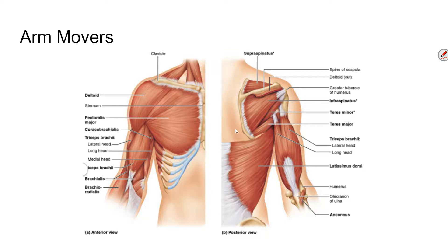Then there's the deltoid, which is a relatively big muscle. It abducts the arm — it pulls the arm away from the body. If you think about moving your arm from your side directly out beside you, that is your deltoid abducting the whole arm.